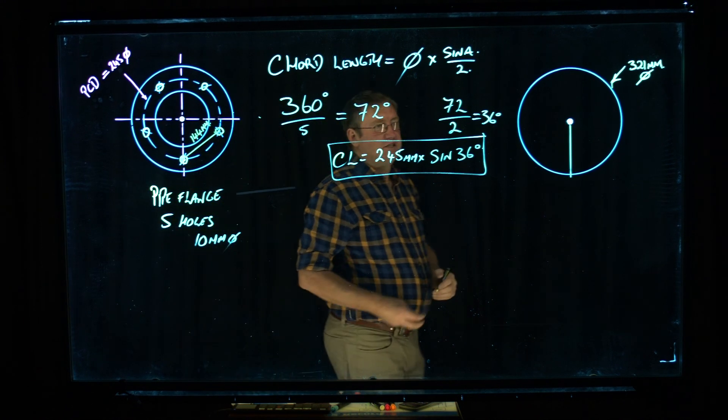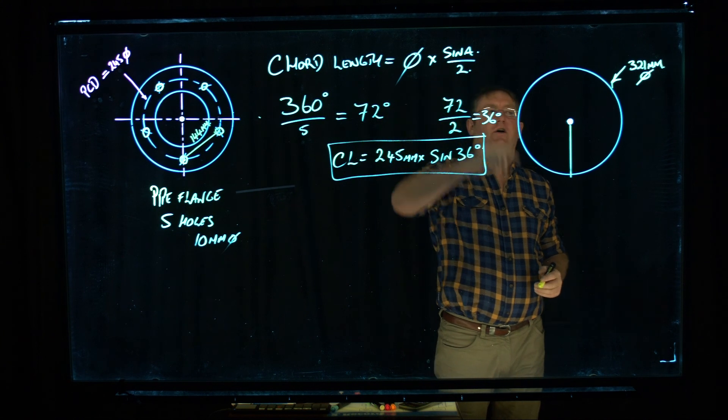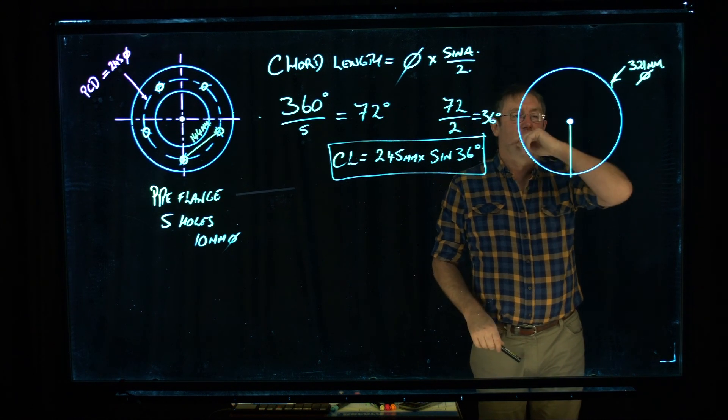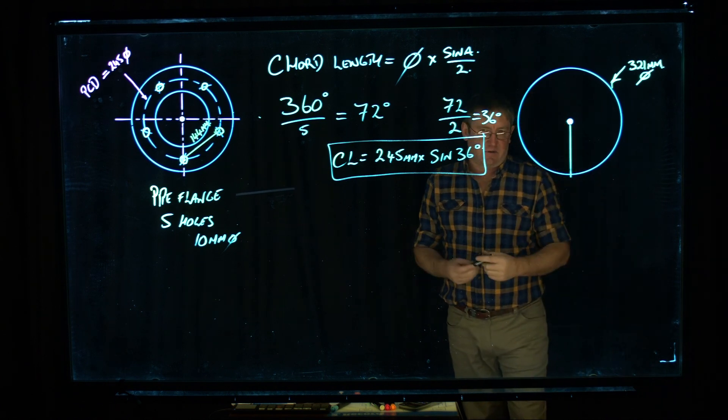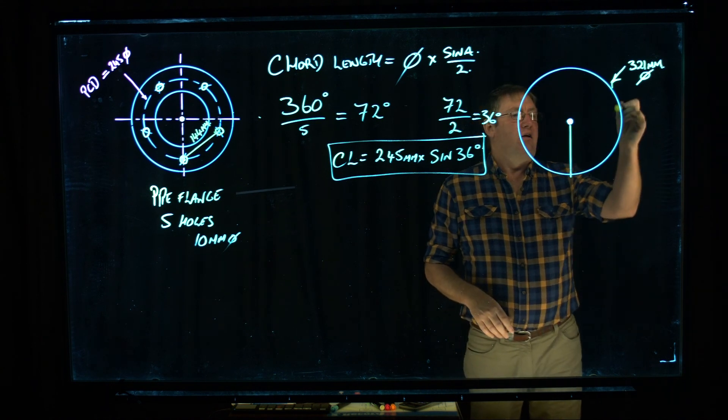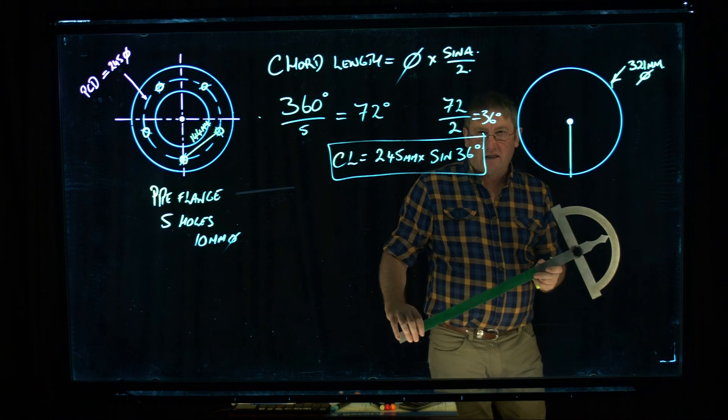We can use exactly the same formula, chord length, diameter times sine A over 2, to determine any angle on a circle. Let's say you're laying something out on a bench, on a piece of metal, and you want to work out an angle when you haven't got a large protractor.